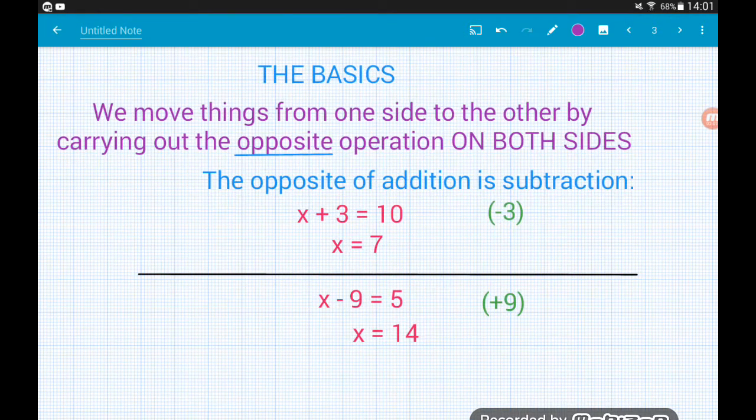If we run through the basics, to move things from one side of an equation to the other we carry out the opposite operation. That's not as complicated as it sounds. Say we've got x plus 3 equals 10. Then to move that 3 we need to do the opposite operation to its sign. So if it's a plus 3 the opposite is minus. So to move the 3 we minus it from both sides.